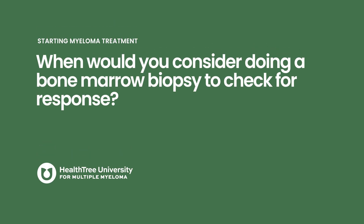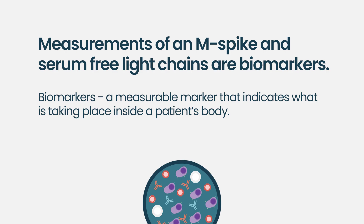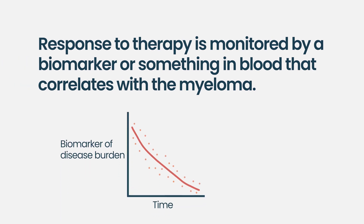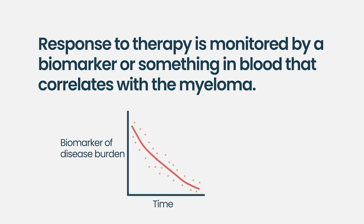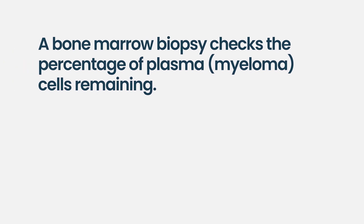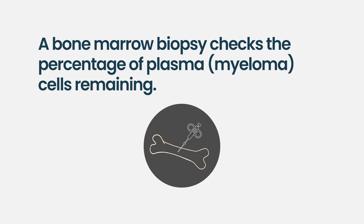The easiest way to test response, especially initially, is with blood markers — the M protein and serum free light chains. However, these are biomarkers that correlate well with the actual myeloma but are not the myeloma itself; myeloma resides in the bone marrow. When we think a patient is in remission after starting therapy, we take a bone marrow biopsy to check how many plasma cells remain and whether those plasma cells are in fact myeloma cells.